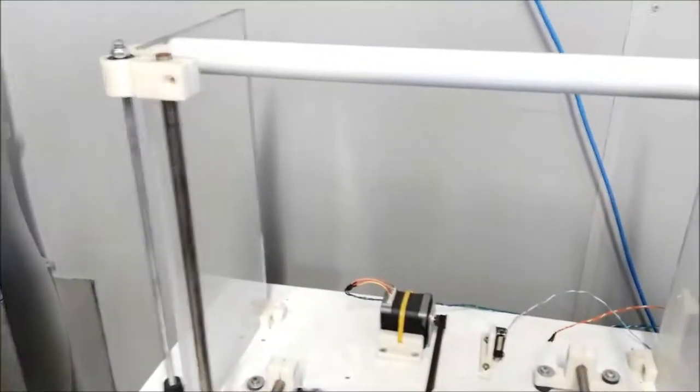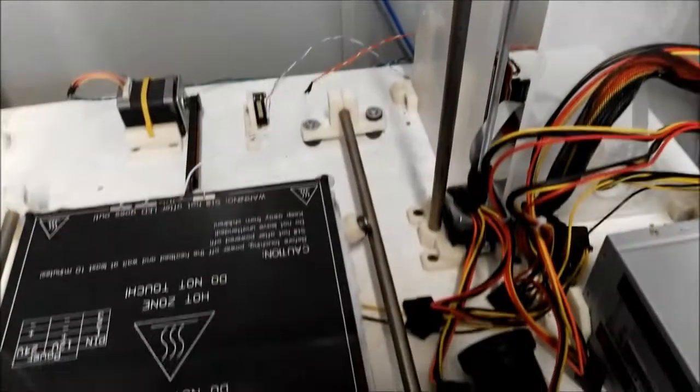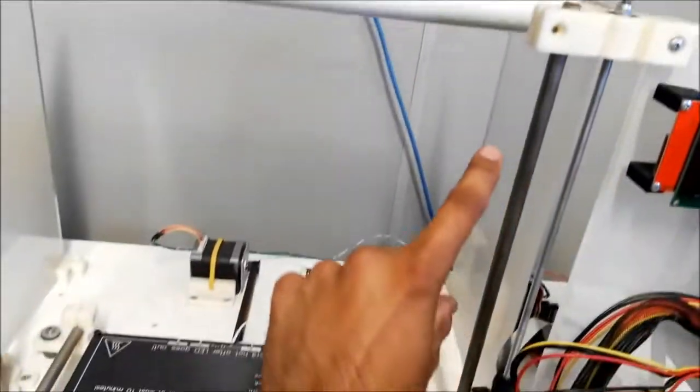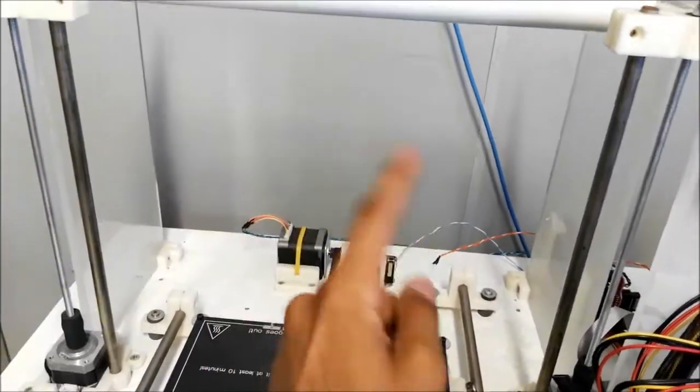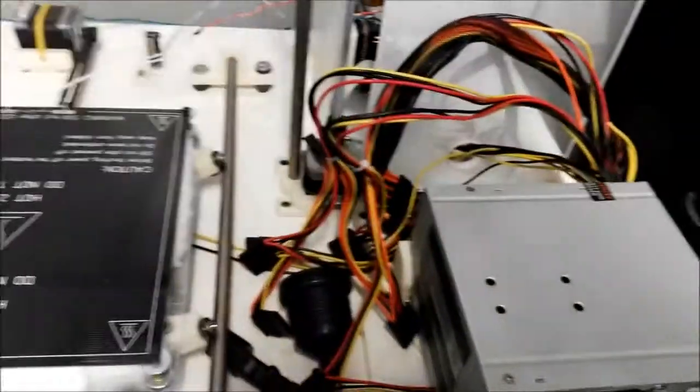Alright, so that's what the incomplete version looks like. Just up to the heat bed and the y-axis, still to assemble the x-axis which goes across here and the extruder sub-assembly. And this is a complete version. I'll give you a look at the cabling for the y-axis.